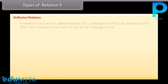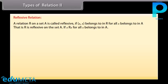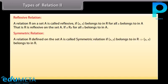Reflexive relation: A relation R on a set A is called reflexive if (x, x) belongs to R for all x belonging to A. That is, R is reflexive on the set A if x is related to x under the relation R for all x belonging to A. Symmetric relation: A relation R defined on the set A is called symmetric if (x, y) belonging to R implies that (y, x) belongs to R.